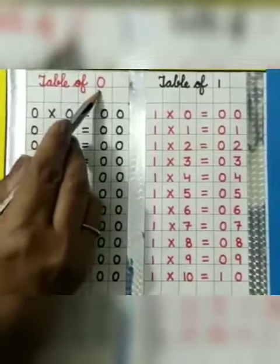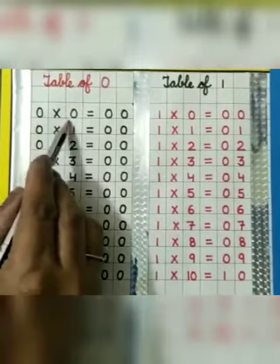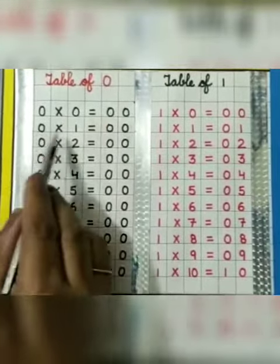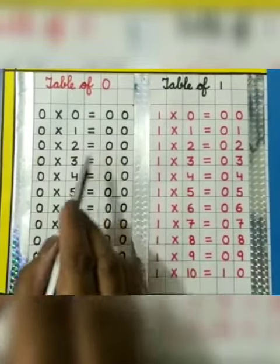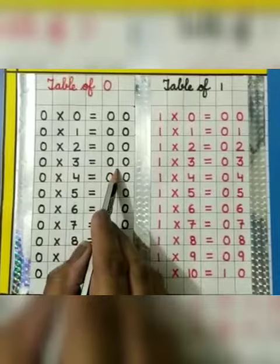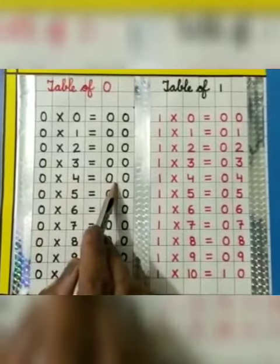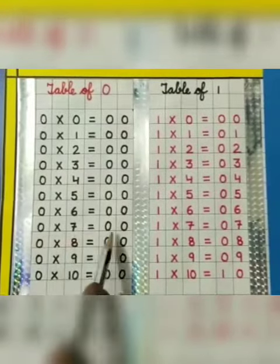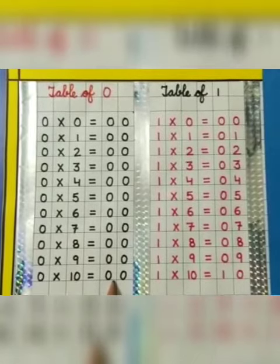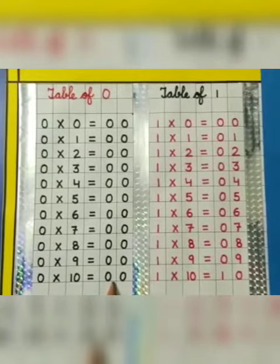Table of 0: 0 0s are 0, 0 1s are 0, 0 2s are 0, 0 3s are 0, 0 4s are 0, 0 5s are 0, 0 6s are 0, 0 7s are 0, 0 8s are 0, 0 9s are 0, 0 10s are 0. Now let's revise it again.